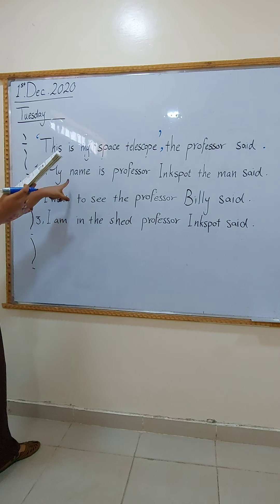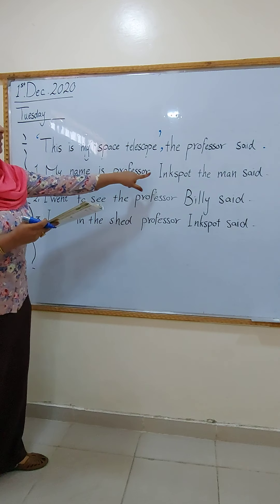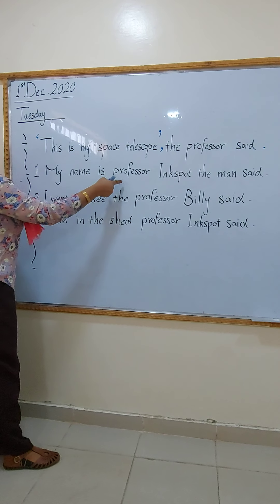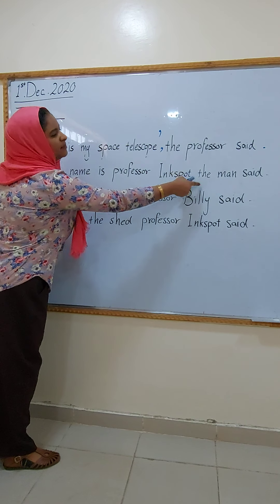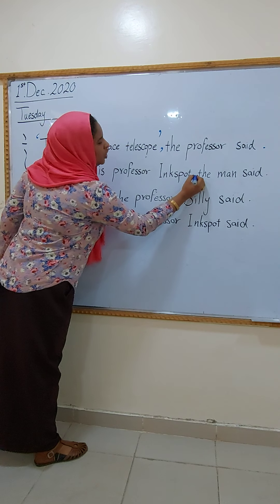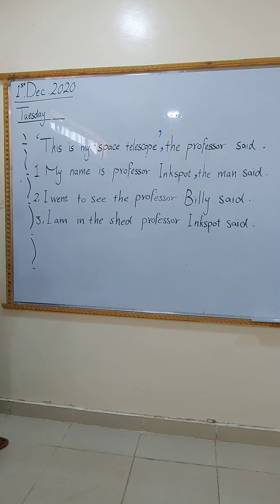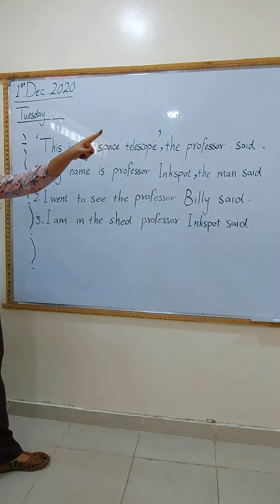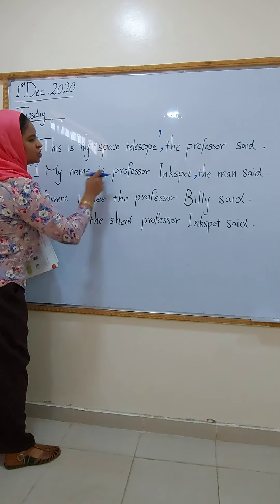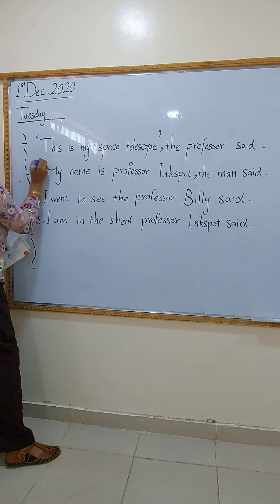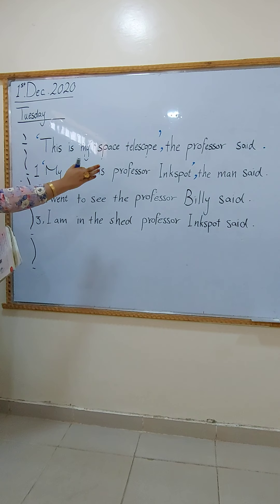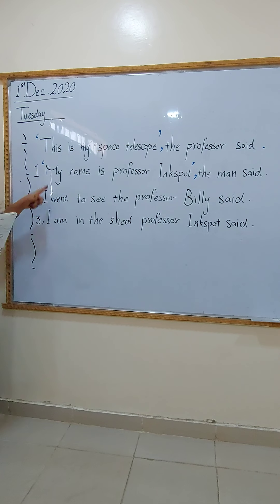Number one: 'My name is Professor Inkspo,' the man said. Firstly, I have to put a comma here. And this is the speech of the professor: 'My name is Professor Inkspo.' So I put an opening quotation mark here and a closing one here, and of course the full stop.